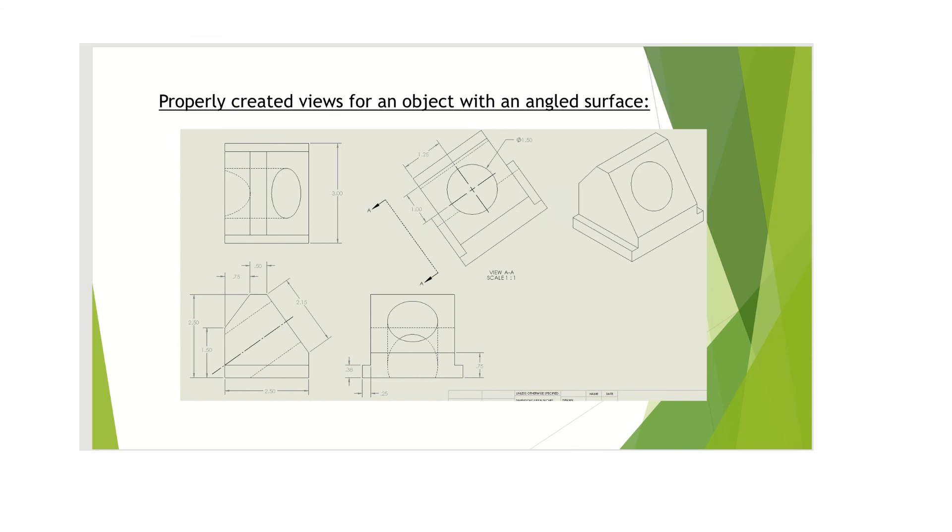It's projected over this auxiliary view here. It shows exactly what you see from that point of view. You can see the hole is round and the dimensions that locate—now be careful about these other parts of the object because they may be distorted. So be careful about what you dimension to. Again, don't put dimensions on that part of the drawing. It's distorted on that part. Don't put dimensions because you're looking at them from an angle.